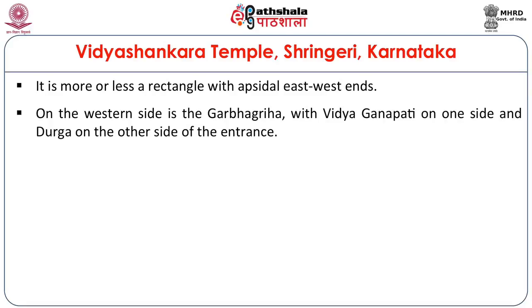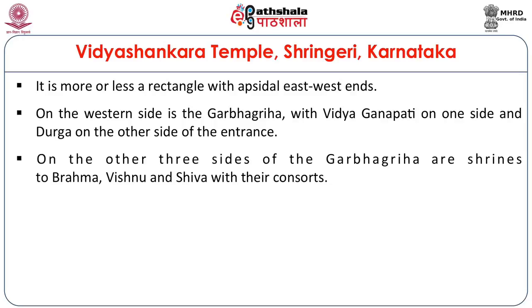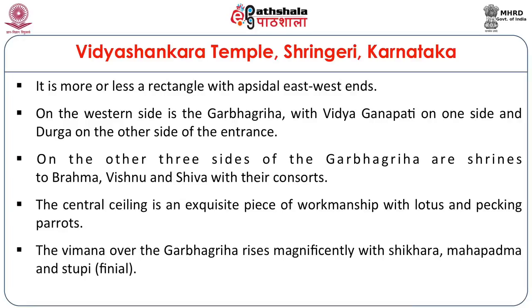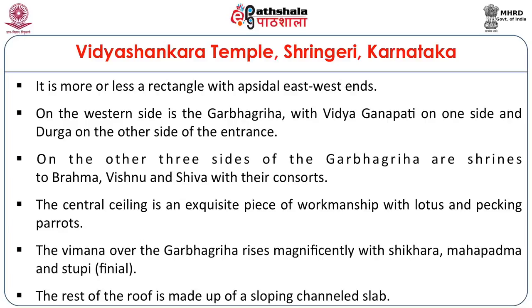On the western side is the Garbhagriha with Vidya Ganapati on one side and Durga on the other side of the entrance. On the other three sides of the Garbhagriha are shrines dedicated to the trinity — Brahma, Vishnu and Shiva — along with their consorts. The central ceiling is an exquisite piece of workmanship with lotuses and pecking parrots in relief. The Vimana over the Garbhagriha rises magnificently with the Shekhara, Mahamandap, and the Stupi — the finial. The rest of the roof is made up of a sloping channelled slab.